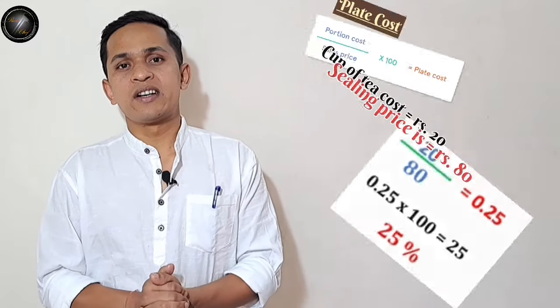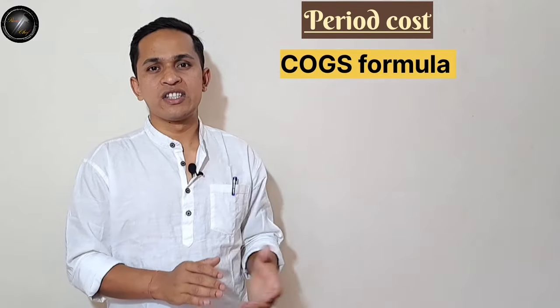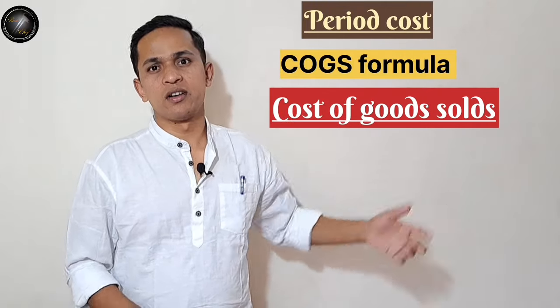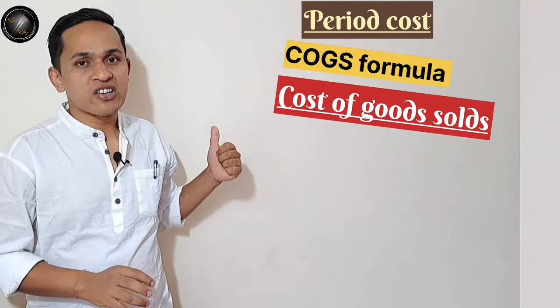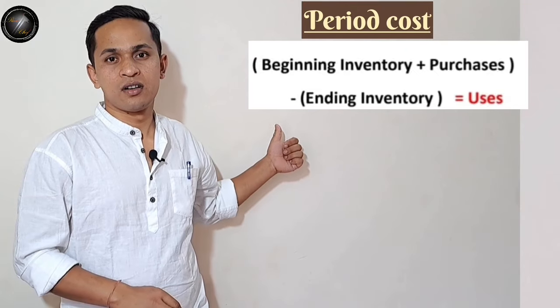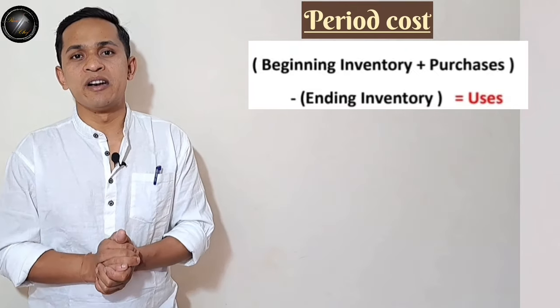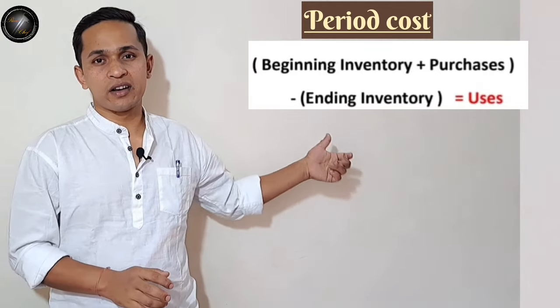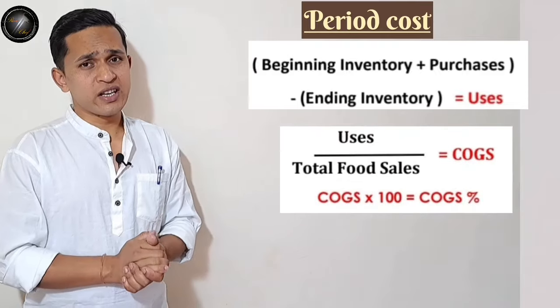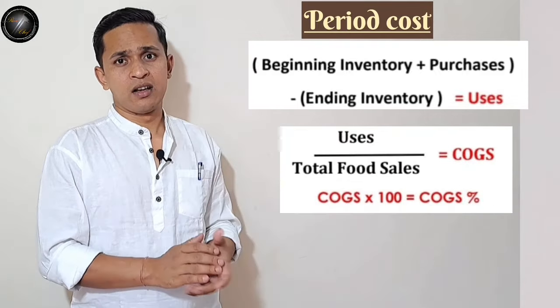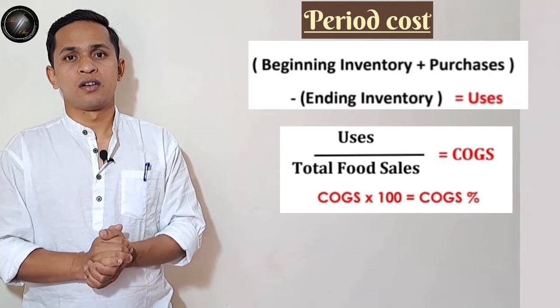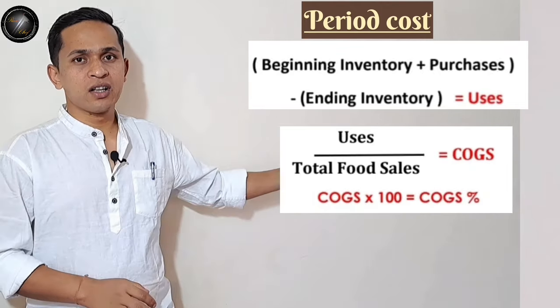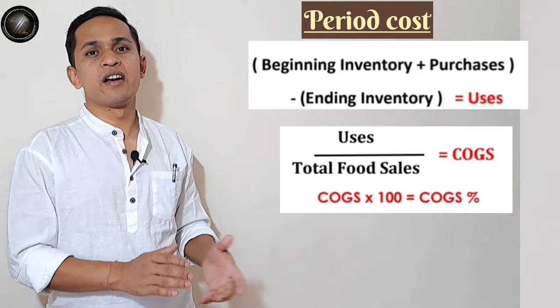Now if you want to determine your period cost, you should know about the COGS formula — Cost of Goods Sold. The formula is: beginning inventory plus purchases minus ending inventory, which gives us usage — meaning how much food we used in this period. Then we take the usage and divide it by our food sales to get COGS. Take the COGS and multiply by 100 to get our COGS percentage, our food cost percentage.